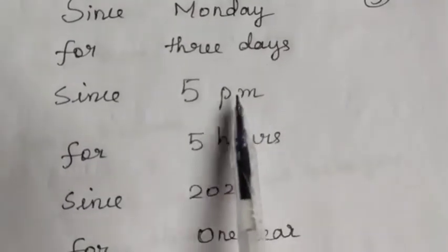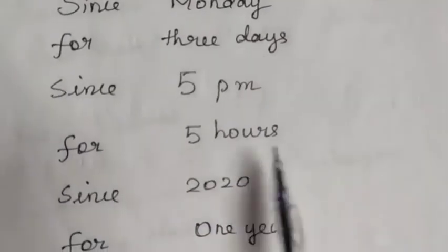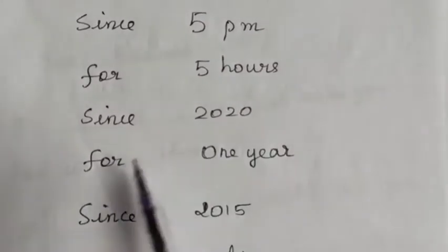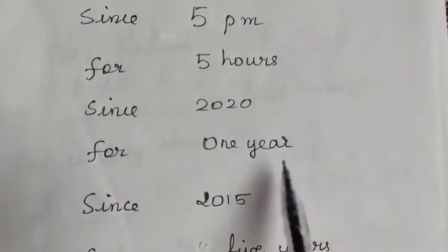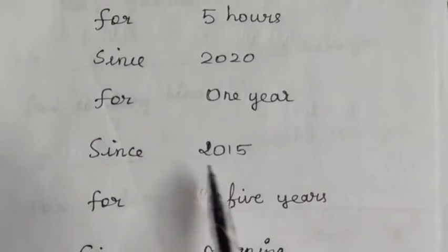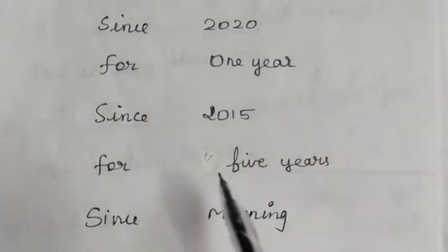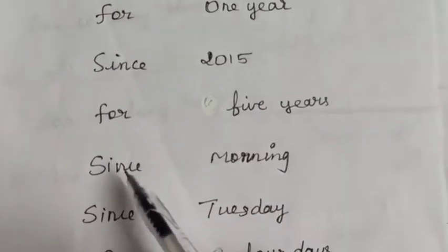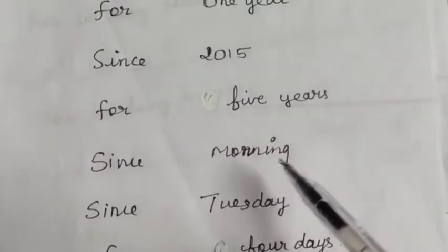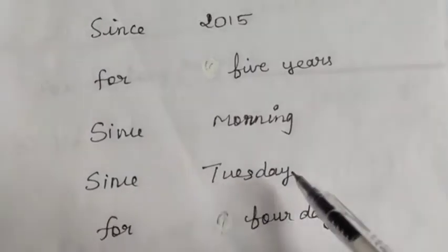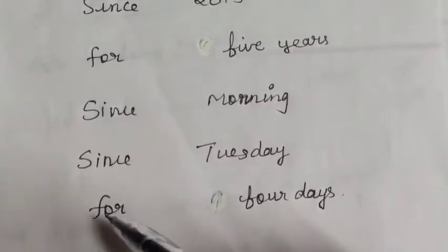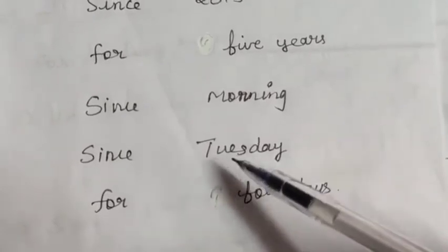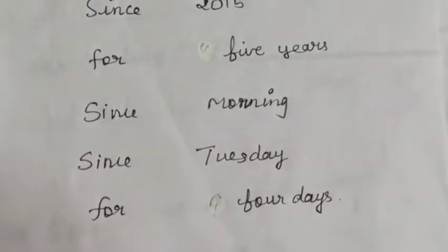More examples: since 2015 is a point of time; for 5 years is a period of time. Since morning, since evening, since afternoon, since Tuesday — all are points of time. For 4 days is a period of time. So since Tuesday is a point of time, and for 4 days is a period of time.